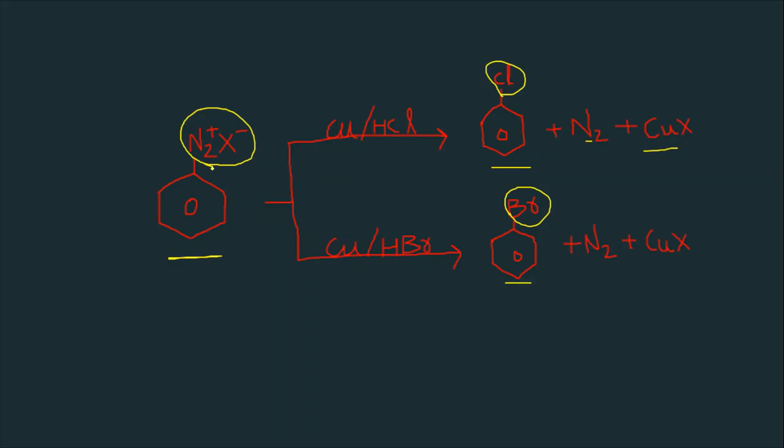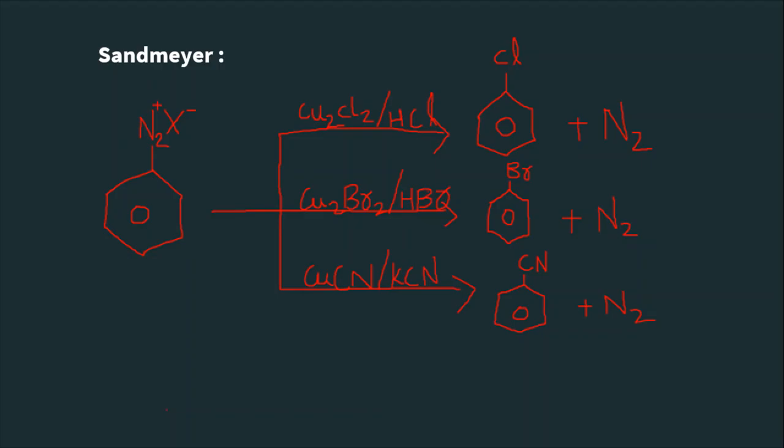It's a simple trick to remember that. Fluoride is replaced in presence of BF4 minus. In Sandmeyer reaction also we get chlorobenzene and bromobenzene, so what's the difference between Sandmeyer and Gatterman?